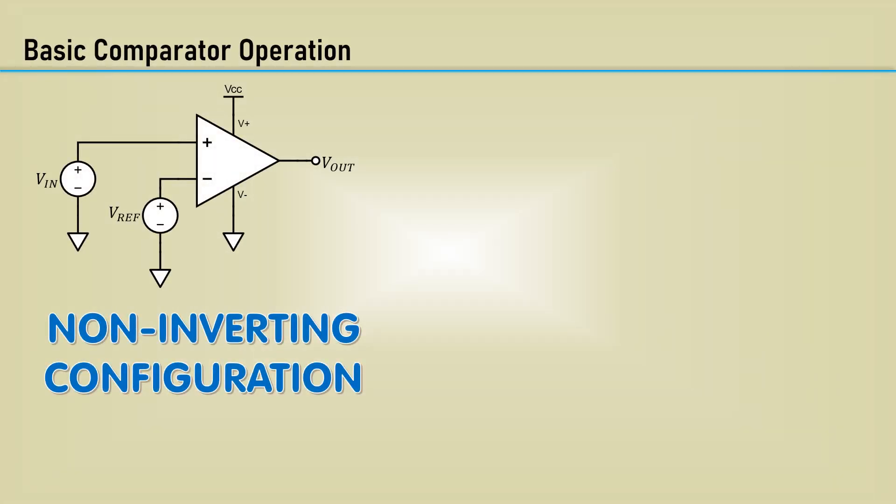Let's begin with a quick review of comparators. Here is the most basic non-inverting comparator circuit. The input is analog and the output is digital. The input is connected to the non-inverting input of the comparator, and the DC reference signal is connected to the inverting input.